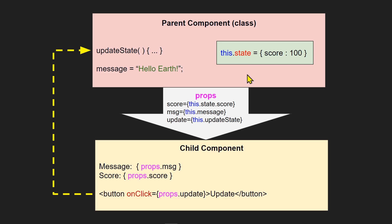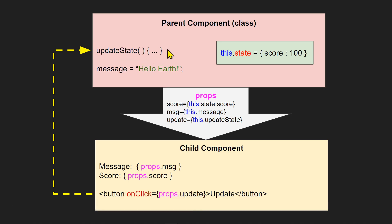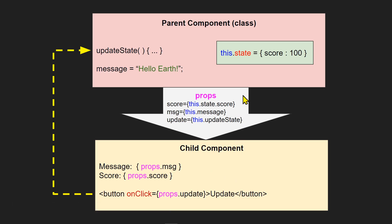To change a parent's state from a child component, you pass a function down as a callback. When you click the update button in the child, it calls that function through the props object, which triggers the update function back in the parent component. Once the state changes, the new data trickles back down and updates the view. This is how React manages its state.